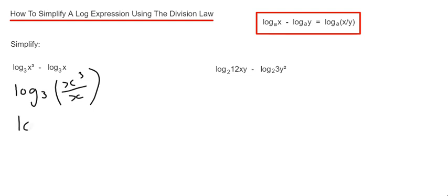We can just simplify this a little bit now. x cubed divided by x will give us x squared, and that's our final answer.